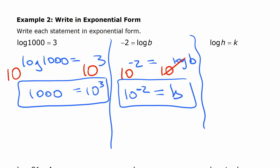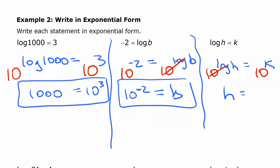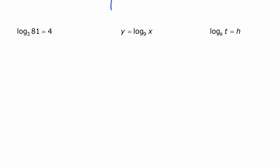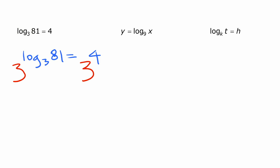The third one: log h equals k. Still common logarithms, base ten. We do anti-log base ten on both sides, that cancels out, and we have h equals ten to the k. Now three more in different bases. For log base three of eighty-one equals four: since log base three is involved, we do anti-log base three on both sides, meaning we raise three to the power of each side. The anti-log and log cancel out, leaving eighty-one equals three to the fourth.